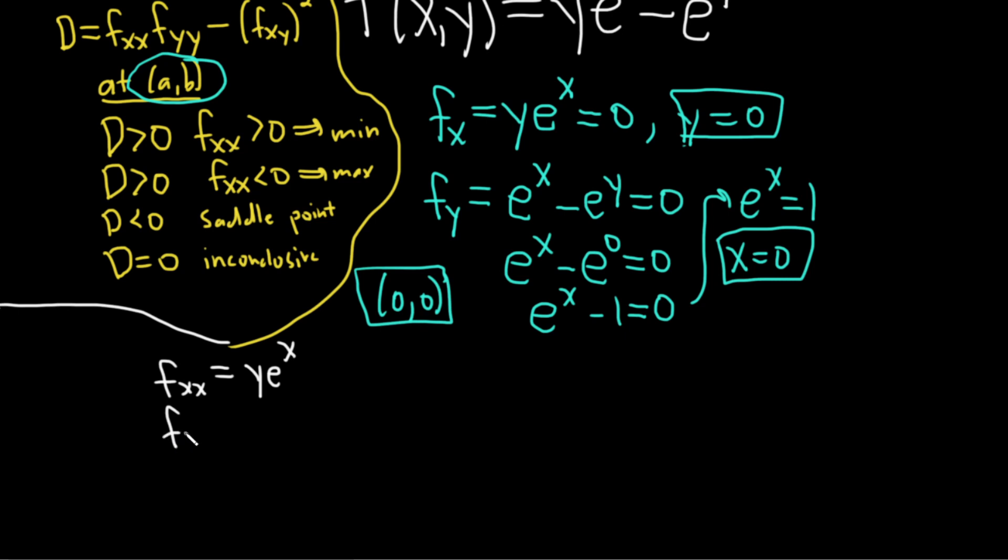And then fyy, that's the partial with respect to y. We're looking here. In this case, the derivative of e^x, well that's zero, so it goes away. The derivative of e^y is simply e^y, so we get negative e^y. And the last one we need is fxy. That's the partial of fx with respect to y. If we compute that, we'll notice that the derivative of y is 1 and e^x is a constant, so we just get e^x.